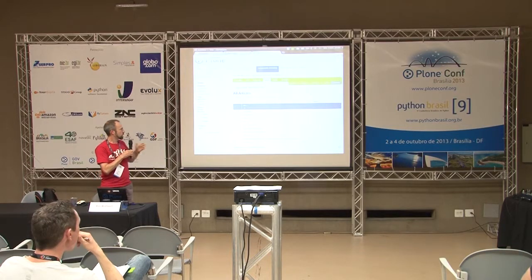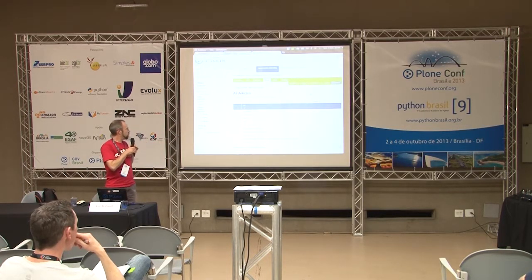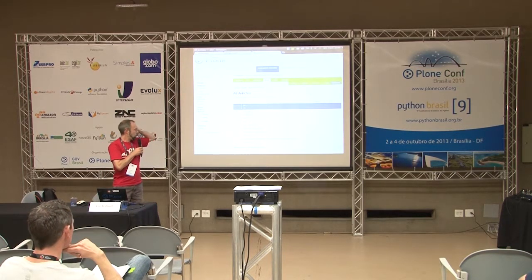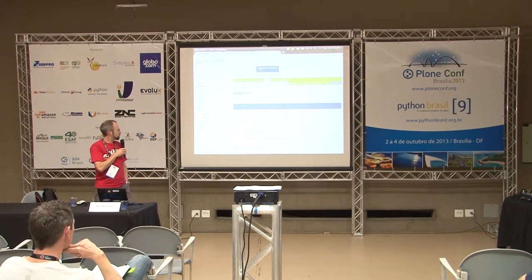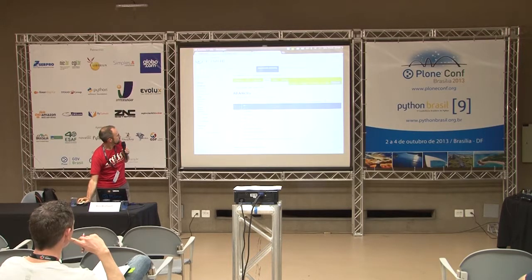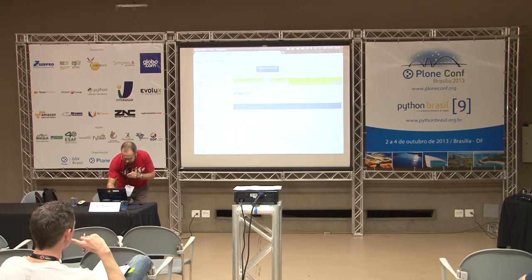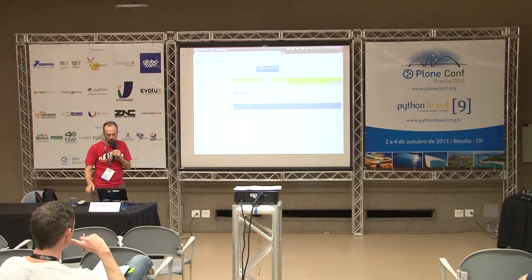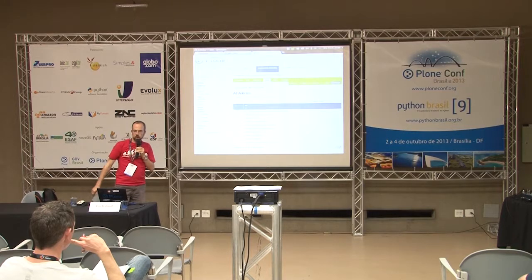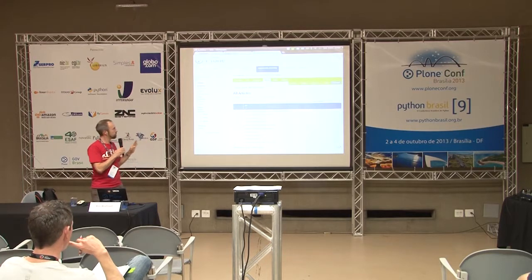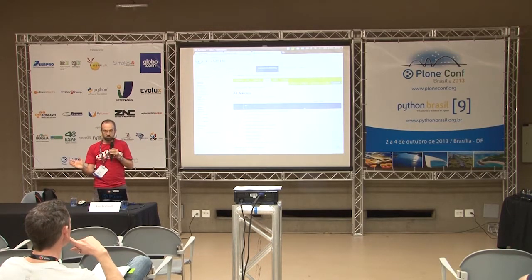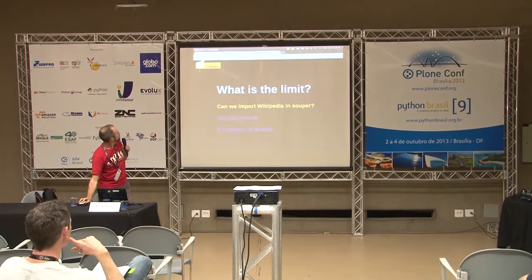Here we have a DataTables component where we can display rapidly a long list of contents. We have 400,000 entries here, and it's full-text indexed. Here is how it behaves — let's search for John, for instance. Okay, it's instantaneous. Really fast. Pagination is working really nicely as well — there is a batch mode in Souper which allows me to do that. It's just perfect.